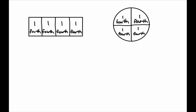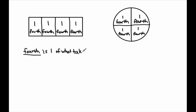So a rectangle and a circle have been partitioned into four equal shares. Why are they called fourths? You can pause the video and see if you can figure it out. This is called a fourth because a fourth is one of what it takes four of to make a whole. We're going to call this piece a fourth because it is only one of what it takes one, two, three, four of to make a whole.